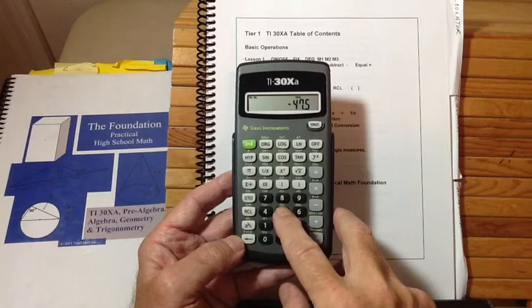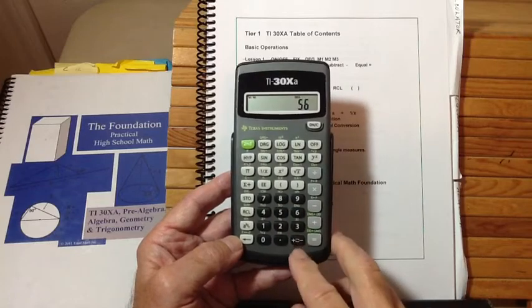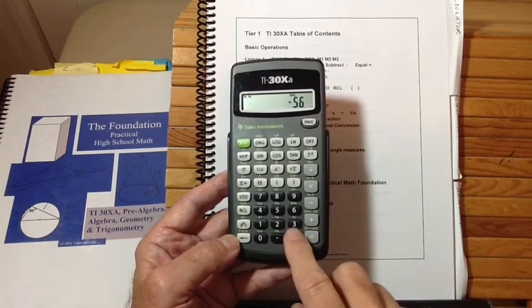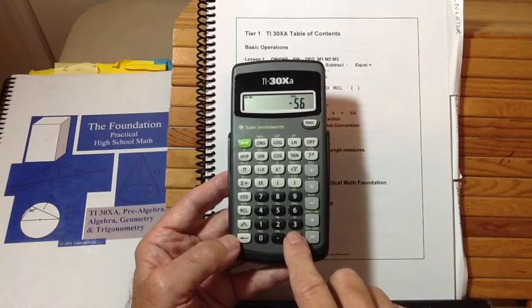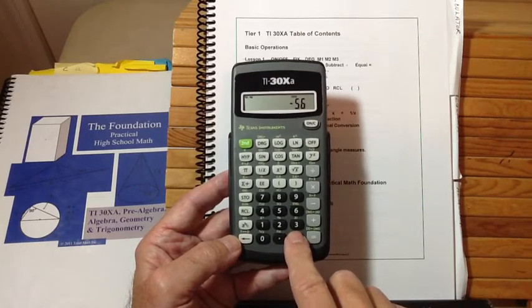And then we teach them negative numbers. For example, if you take 56 and you want to make it negative, you press this key right here, and that makes it negative. Press it again, it turns it positive again. So this is how you make a number go from positive to negative with this key right here.